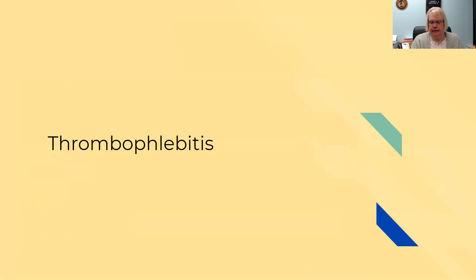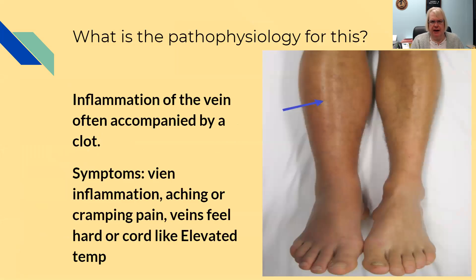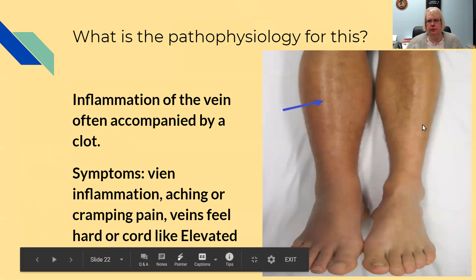Thrombophlebitis is the first one we're going to talk about. The pathophysiology: it's an inflammation of the vein that's often accompanied by a clot. The symptoms are vein inflammation, aching or cramping pain, veins feel hard or cord-like, and an elevated temperature. You can see the obvious difference between these two legs.